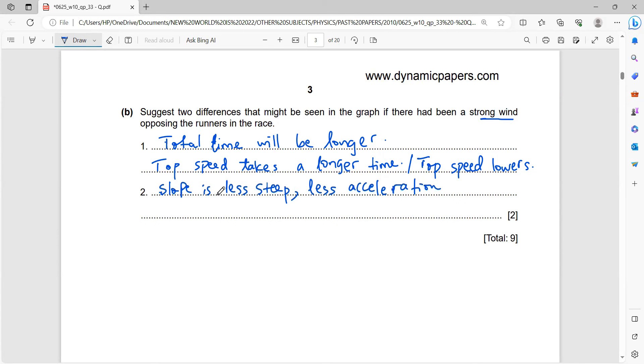So remember in your speed time graph, if this is V and this is T, the slope here is your acceleration. So this is the acceleration because you just have V over T. So you could also tell them that the acceleration will be greater. That's it. That's it about that question.